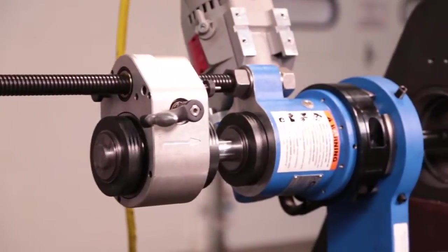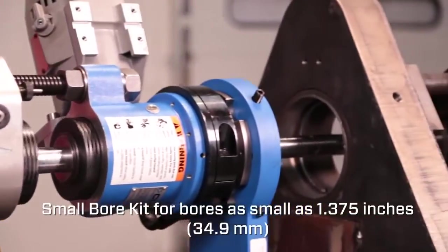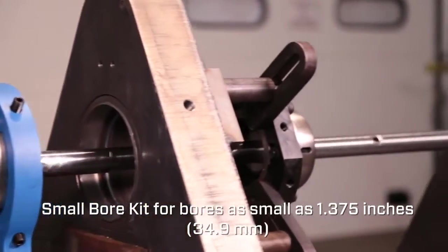With an optional small bore kit, you can bore as small as 1.375 inches in diameter.